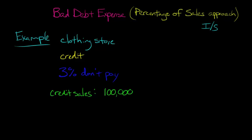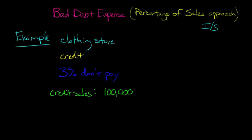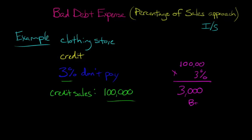We know historically that 3% don't pay. So we're simply going to take that 3% and multiply it by $100,000. We have $100,000, we multiply that by 3%, and that gives us $3,000. And that's going to be our bad debt expense for this year.